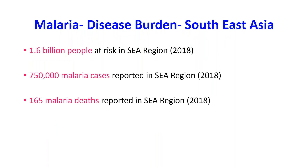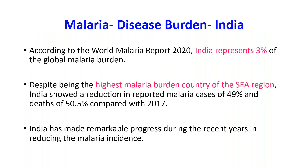In the Southeast Asia region, around 1.6 billion people were at risk of malaria as of 2018, with over 7.5 lakh malaria cases and over 160 malaria deaths reported from this region. In India, according to the World Malaria Report 2020, India represents 3 percent of the global malaria burden. Despite being the highest malaria burden country in Southeast Asia, India showed a reduction in reported malaria cases of 9 percent and a reduction in deaths of 50 percent compared with 2017.